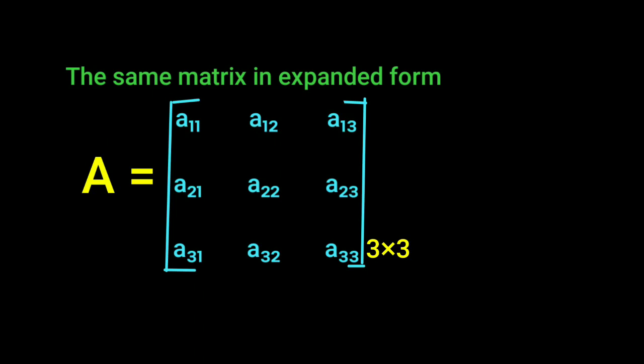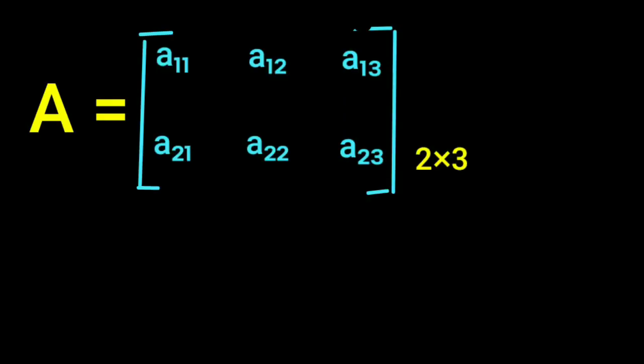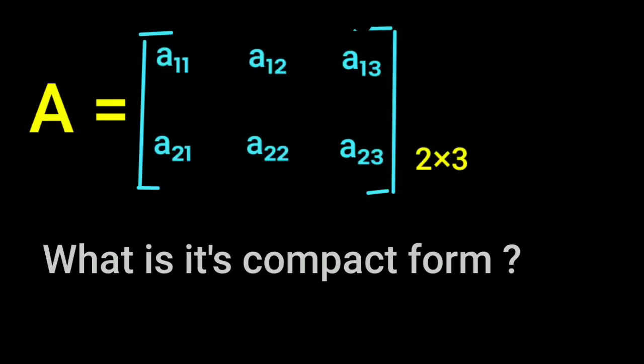This is the expanded form. This is the compact form. Aij 2 by 3.